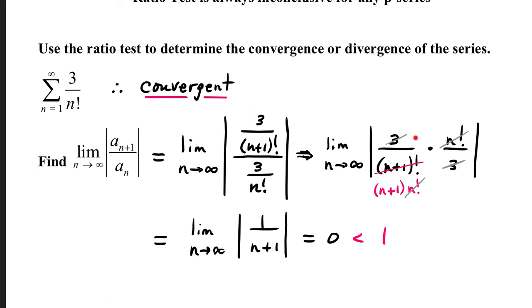The n factorials cancel, so do these threes. That leaves us with a limit as n goes to infinity, absolute value, one over n plus one, and that's equal to zero. Because that's less than one, this infinite series converges.